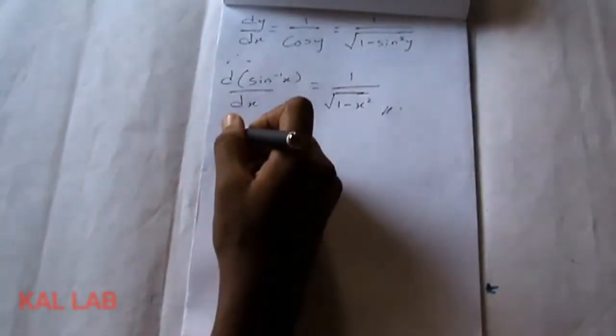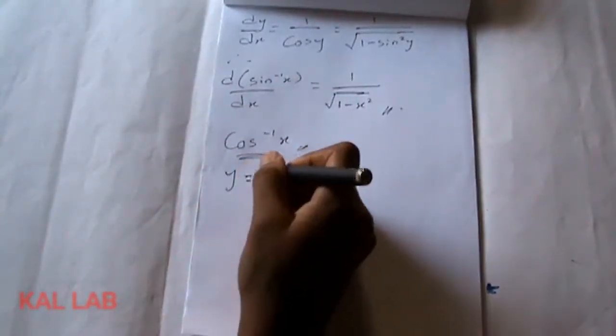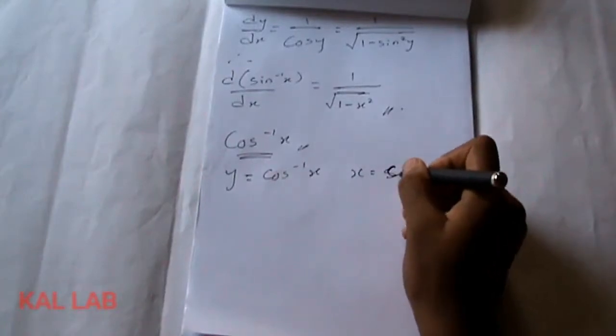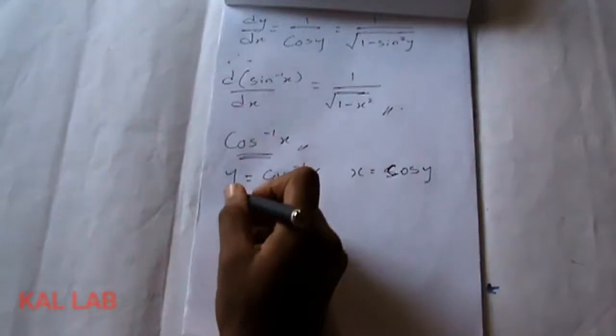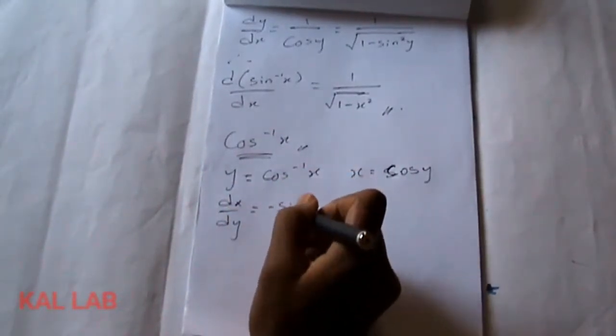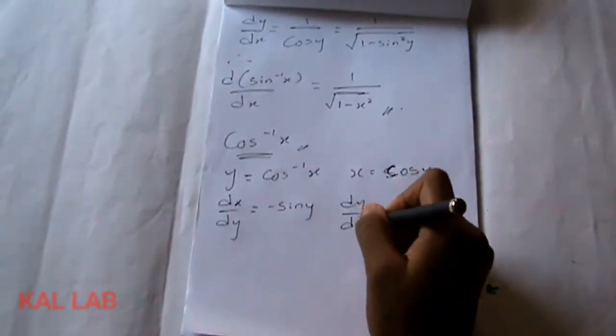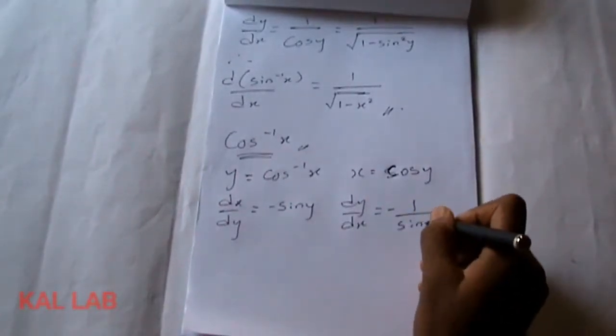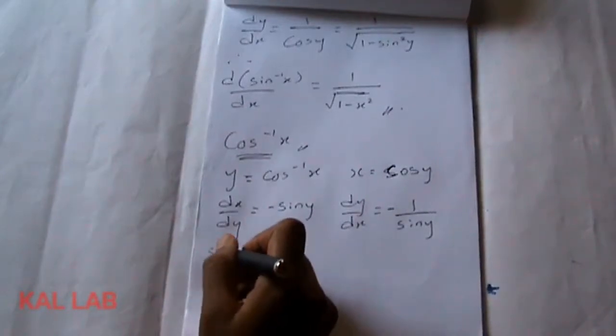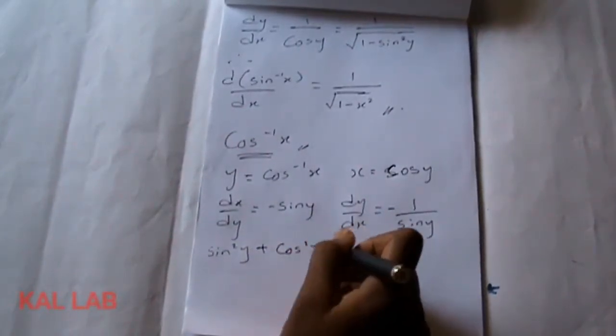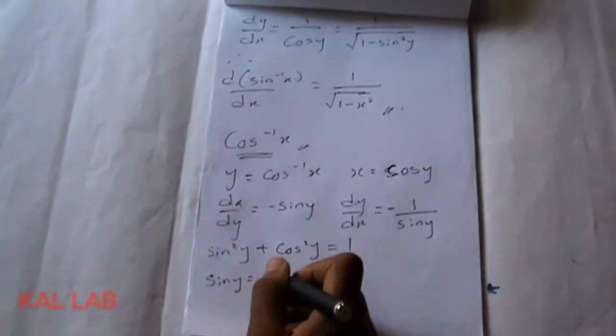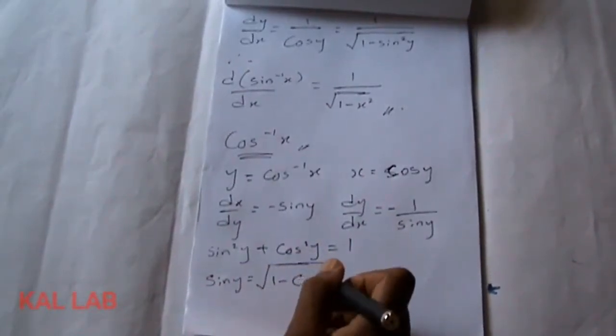Now let's look at the derivative of cos⁻¹(x). Using the same technique, let y = cos⁻¹(x), so x = cos y. Then dx/dy = −sin y, and dy/dx = −1 over sin y. From the trigonometric identity sin²y + cos²y = 1, sin y = √(1 − cos²y).